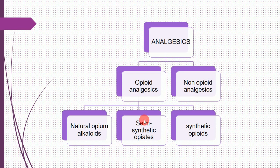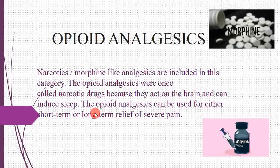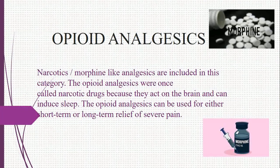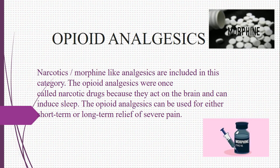Opioid analgesics are further divided into three categories: the first is natural opium alkaloids, the second is semi-synthetic opiates, and the third is synthetic opiates. These drugs have the capability to relieve pain sensation as well as cause or produce sleep — they are also called narcotic or morphine-like analgesics.